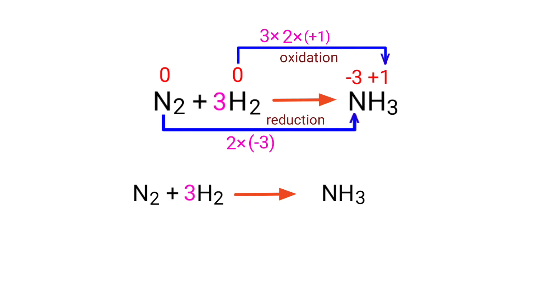Now balance the number of atoms in this equation. In the reactants side, there are 2 nitrogen atoms and 6 hydrogen atoms present. On the products side, there are 1 nitrogen atom and 3 hydrogen atoms present. The number of atoms are not balanced on both sides.